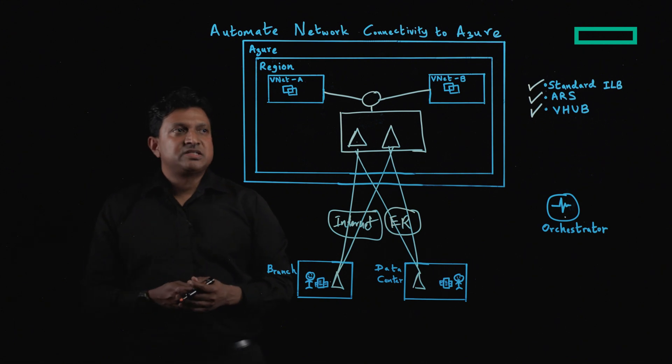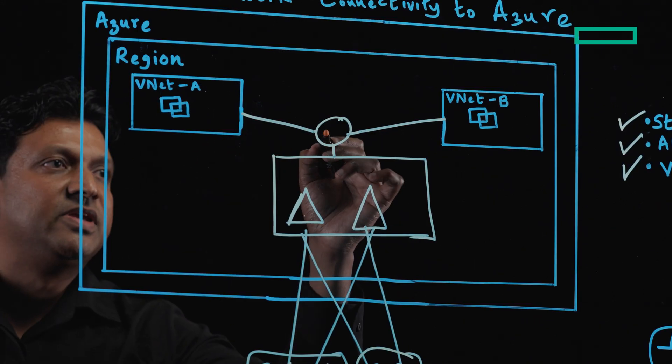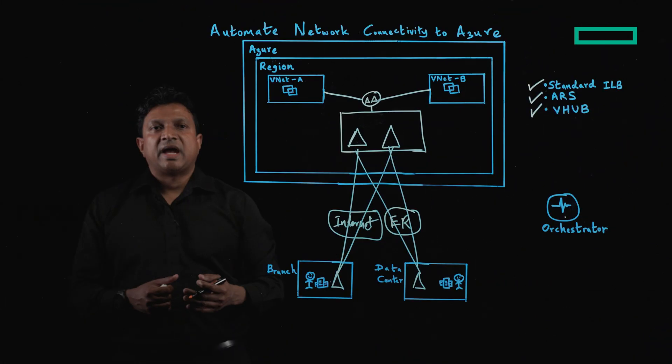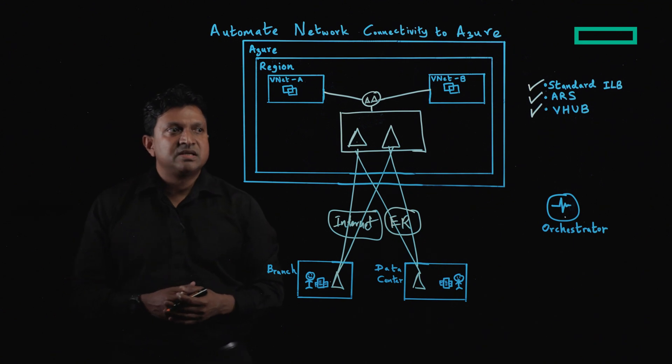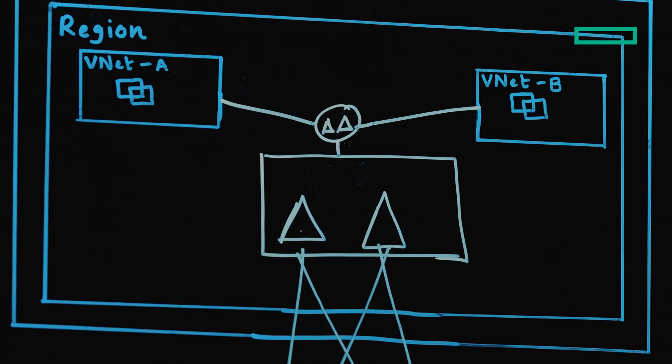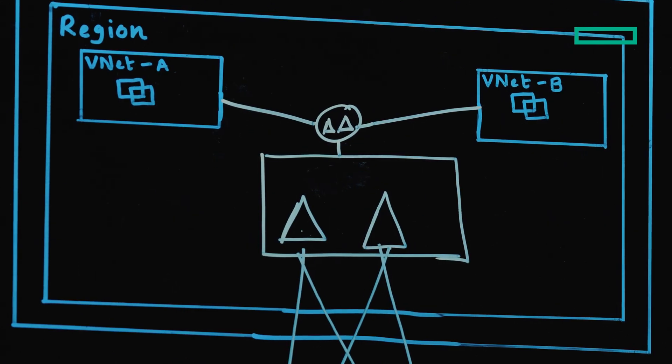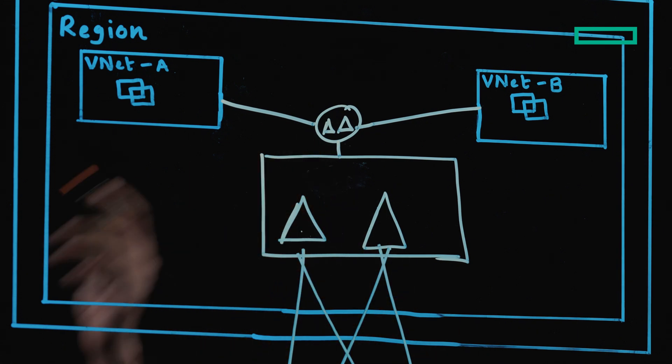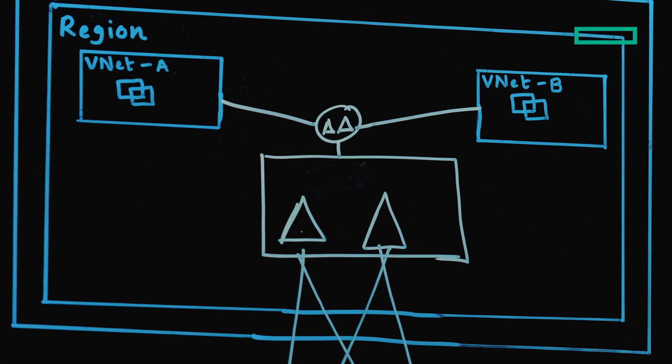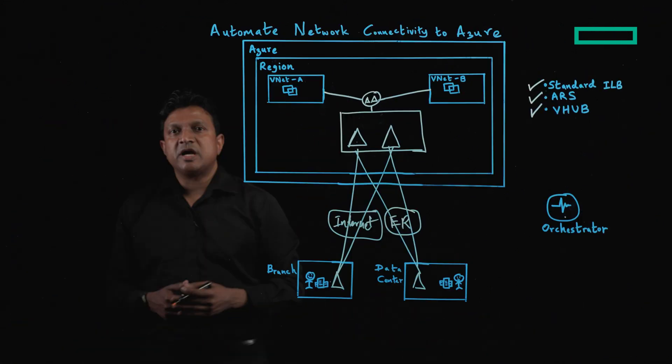Last but not least, we have added another feature into the orchestrator, which allows you to deploy EdgeConnect directly inside the VHub. And this eliminates the need to deploy EdgeConnect appliances inside a Transit VNet. When you deploy EdgeConnect directly inside the VHub, the orchestrator will also go ahead and create the BGP sessions for you automatically.